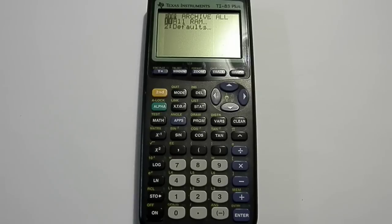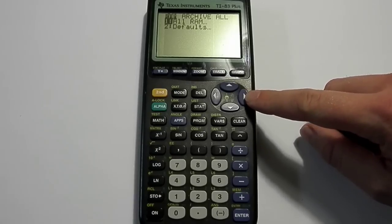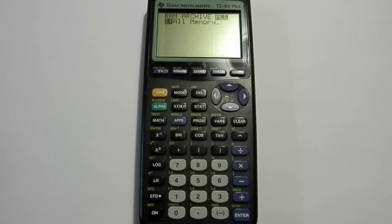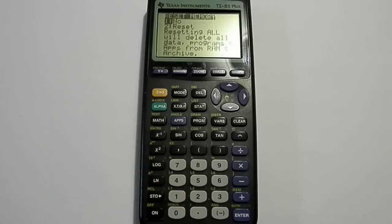I want to make sure that absolutely everything is cleared off of here. So I push the sideways to the right arrow button twice to choose all, and then I press 1 to choose all memory.